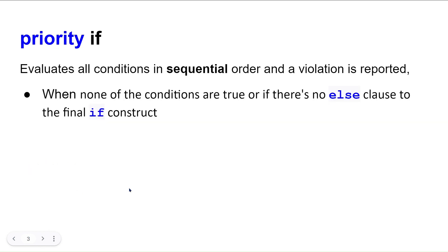Priority if evaluates all conditions in sequential order, one by one, unlike unique and unique zero which have no restriction on evaluation order. It reports an error or violation when none of the conditions are true and there is no else clause — the same error conditions as unique if, but with the key difference that the first statement is always checked first.